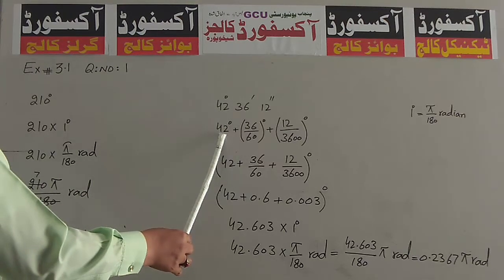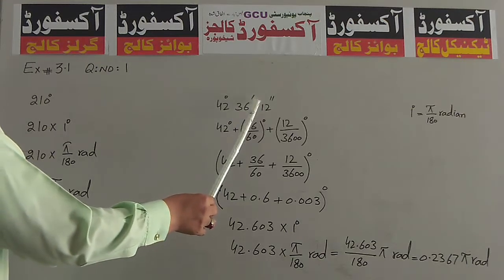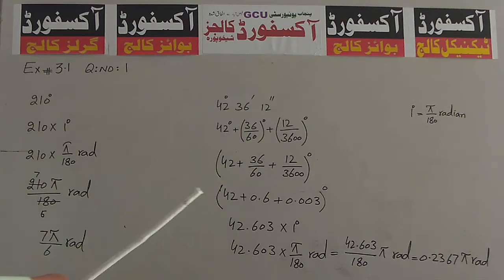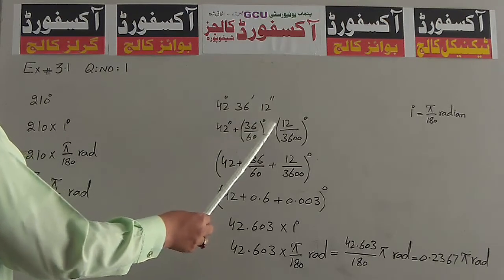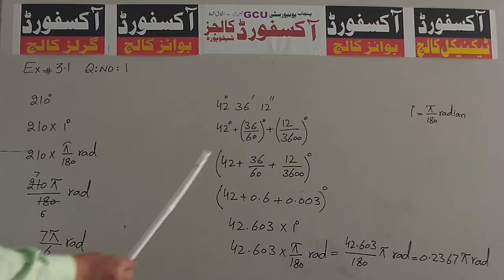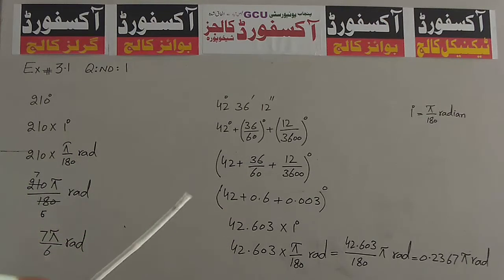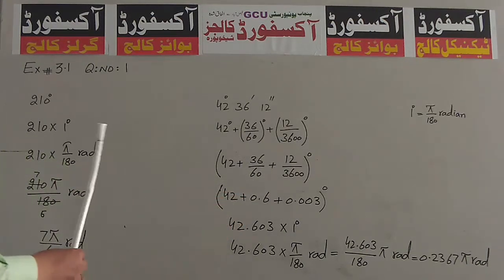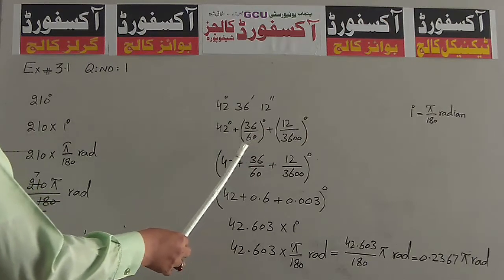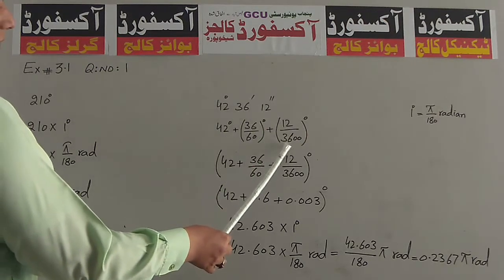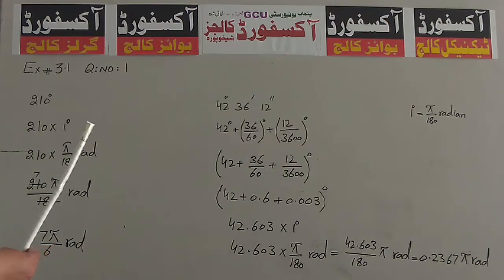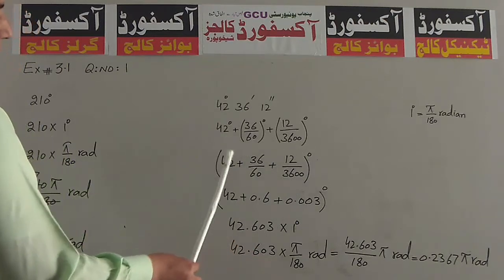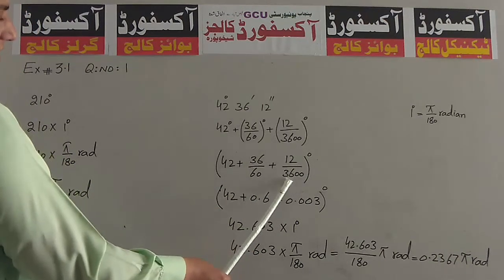Degree वाला हिस्सा पहले लिखा है: 42 plus 36 minutes — इसको 60 से divide करते हैं तो degree का sign लिख सकते हैं. Plus 12 seconds — इसको 3600 से divide करते हैं, यानि 2 दफा 60 से divide किया जाता है, तो इस पर degree का sign लिख सकते हैं. तीनों degree के sign को इकट्ठा करते हैं: 42 + 36/60 + 12/3600, whole degree.